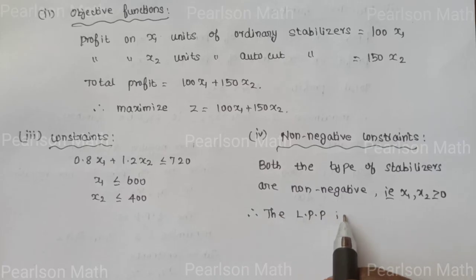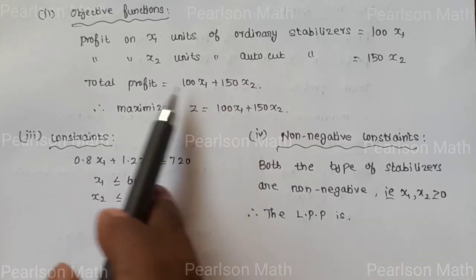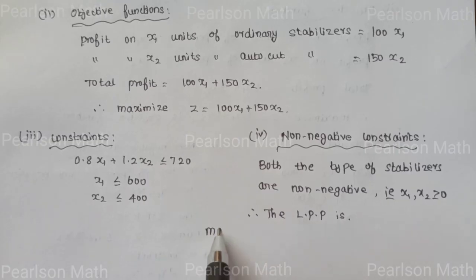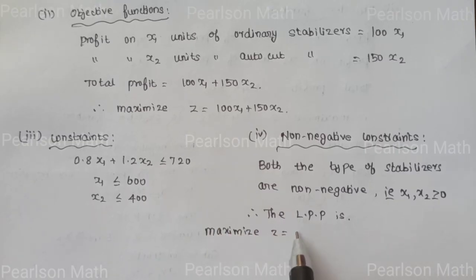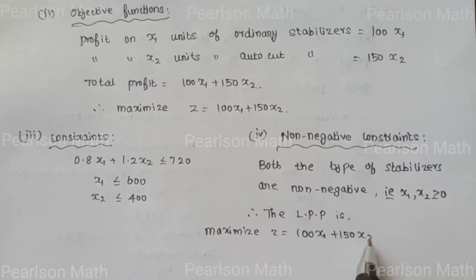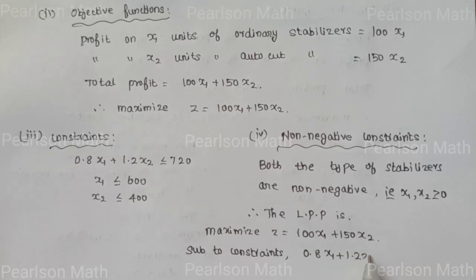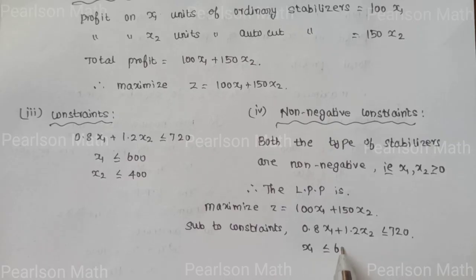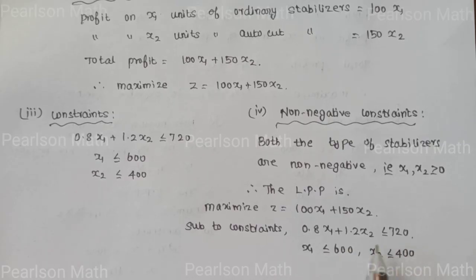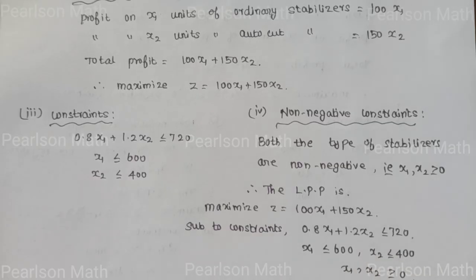Therefore, the linear programming problem is: Maximize Z equal to 100X1 plus 150X2, subject to constraints: 0.8X1 plus 1.2X2 less than or equal to 720; X1 less than or equal to 600; X2 less than or equal to 400; X1, X2 greater than or equal to 0.